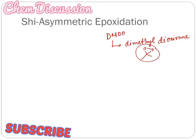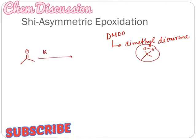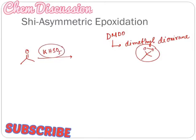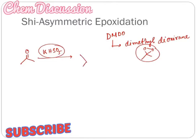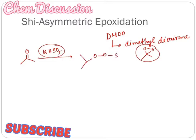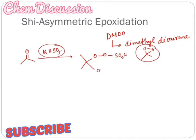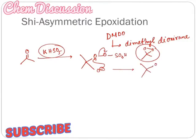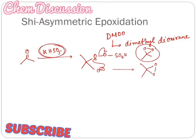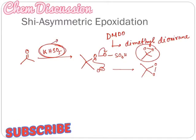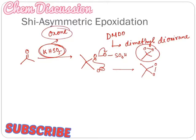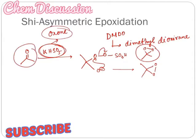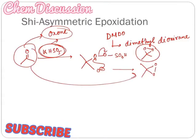Now let us see how DMDO can be synthesized. DMDO can be synthesized from potassium peroxo monosulfate, which forms this intermediate, and now this oxide will attack here and this will give the DMDO. This potassium peroxo monosulfate is commercially known as oxone. So acetone is treated with oxone to give DMDO.